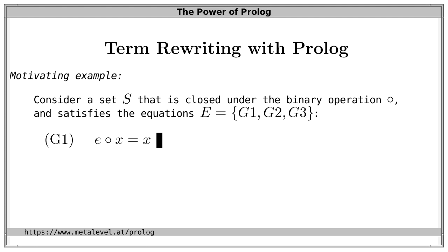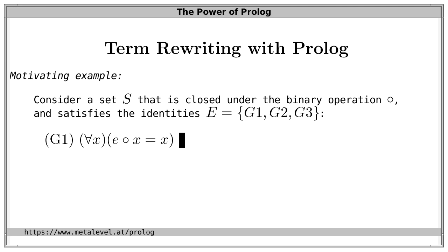First, there is an element E in S such that E circle X is equal to X. This doesn't mean there is something to solve for — we are not looking for an X that satisfies this equation, but rather we demand that for all X the equation hold. So we impose this equation as a constraint on the set S. Such universally quantified equations are also called identities, and we are only interested in sets where this identity holds.